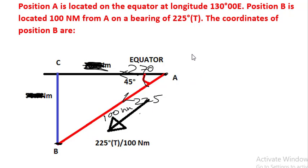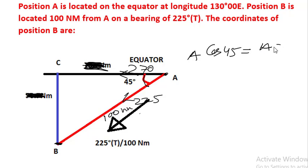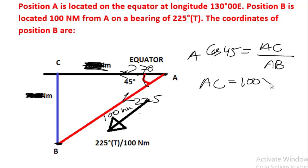First, let's consider AC. Using trigonometry, we know cos 45 is equal to adjacent upon hypotenuse. So adjacent AC divided by hypotenuse AB. We have to find AC, so AC is equal to AB, which is 100, multiplied by cos 45.